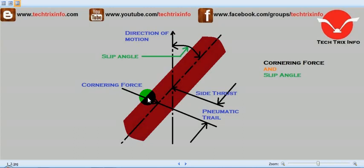But the cornering force produced does not act in line with the side thrust. Rather, it acts at a distance of X or a pneumatic trail.